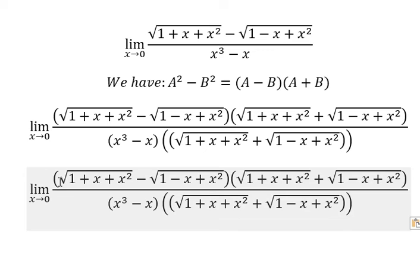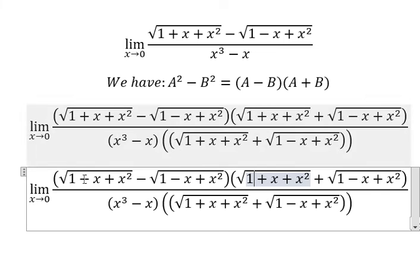So on numerator, you will get A minus B, A plus B. And we can put this one into the square. So that should be like this.